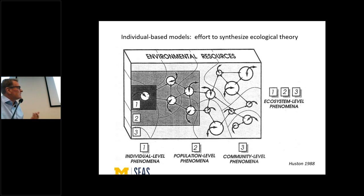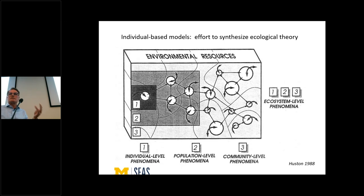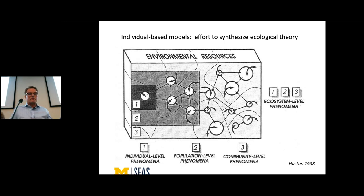Mondrian is an individual-based model — it models each individual plant. The idea of individual-based models is that you can synthesize and unify ecological theory, studying populations, communities, and ecosystems in the same model. Each individual is spatially explicit — it has a location in space. The environment can be heterogeneous, so one individual can be experiencing different nutrient levels and competition from neighbors than another individual. Each individual has its own attributes: species, size, root-to-shoot ratio. If you aggregate over the whole space, you can get ecosystem-level phenomena.